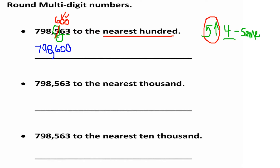We rounded 5 up one more to 6 because the digit in the tens place — the smaller value right next to it — is 5 or more, so it rounds the hundreds digit up by one to 6. The answer is seven hundred ninety-eight thousand, six hundred.